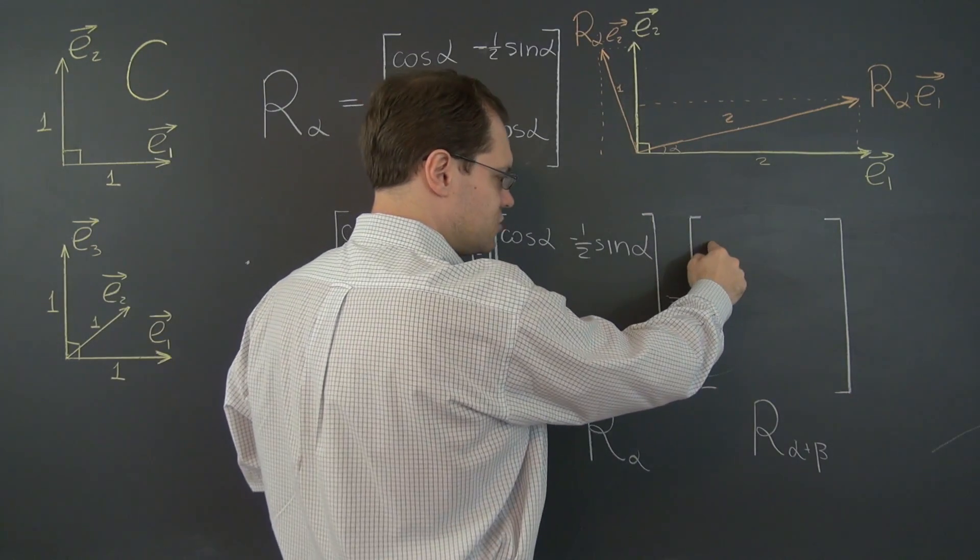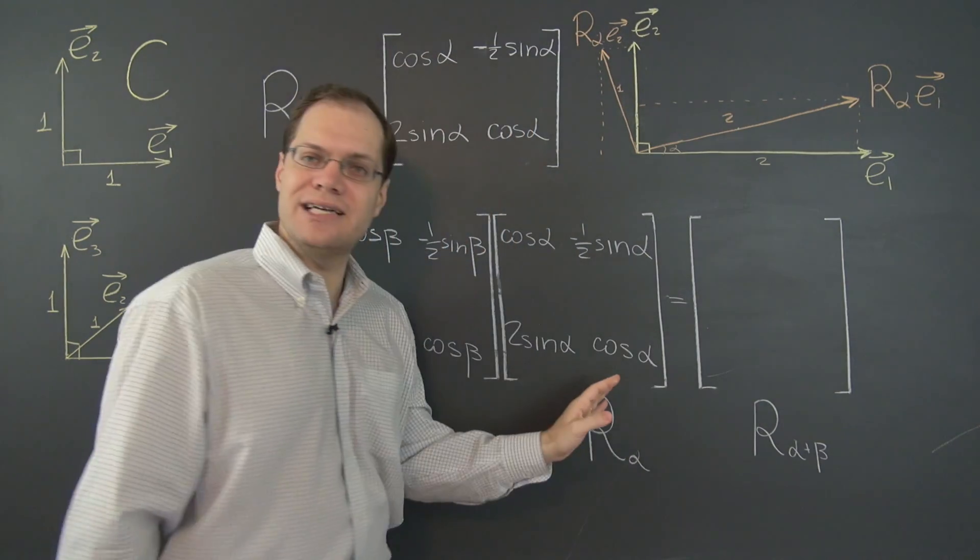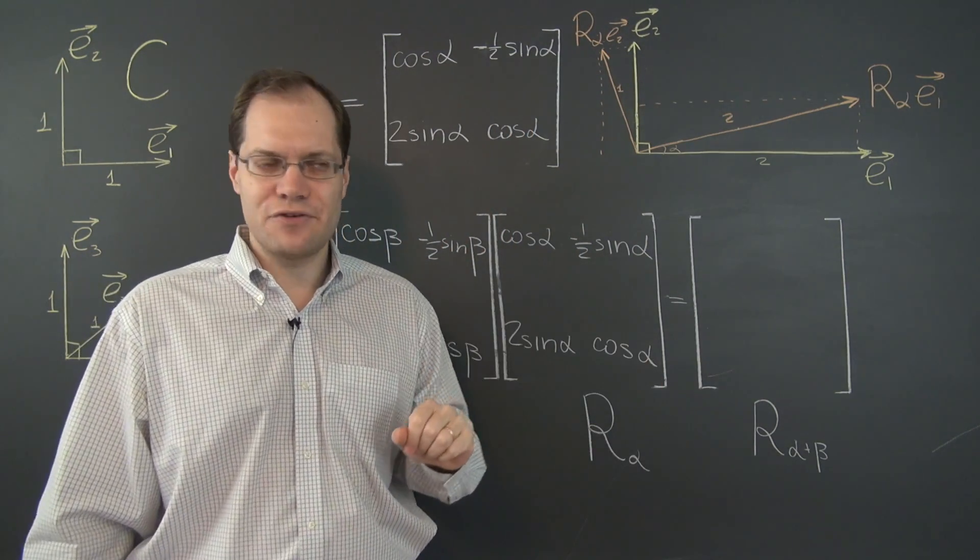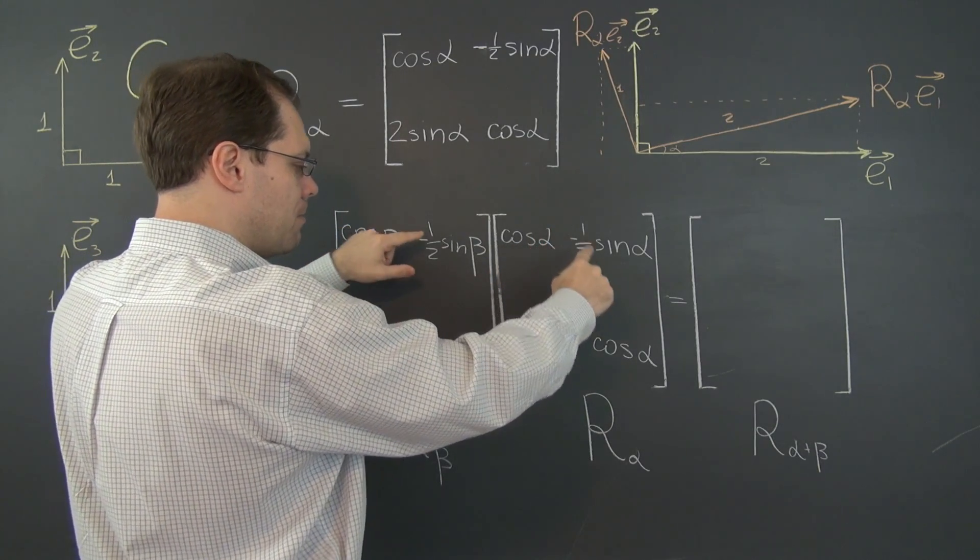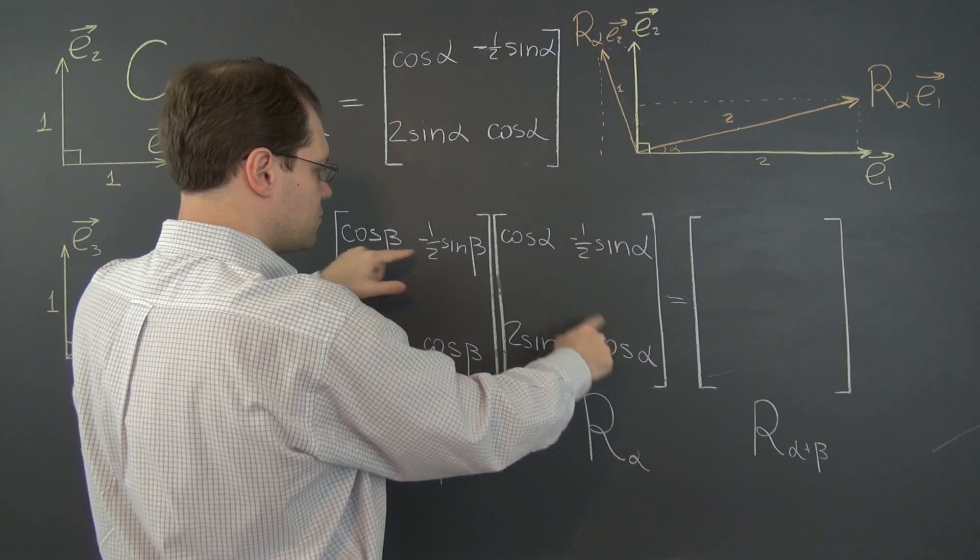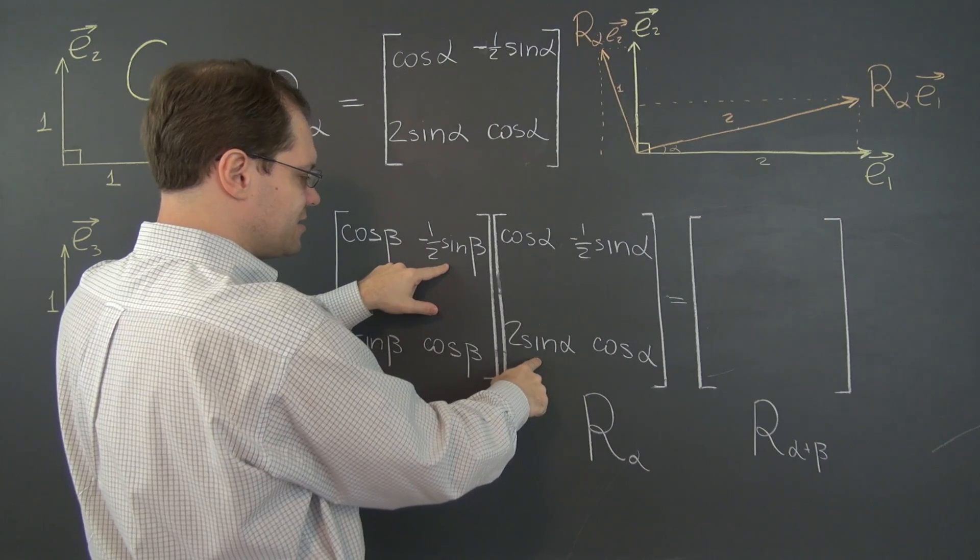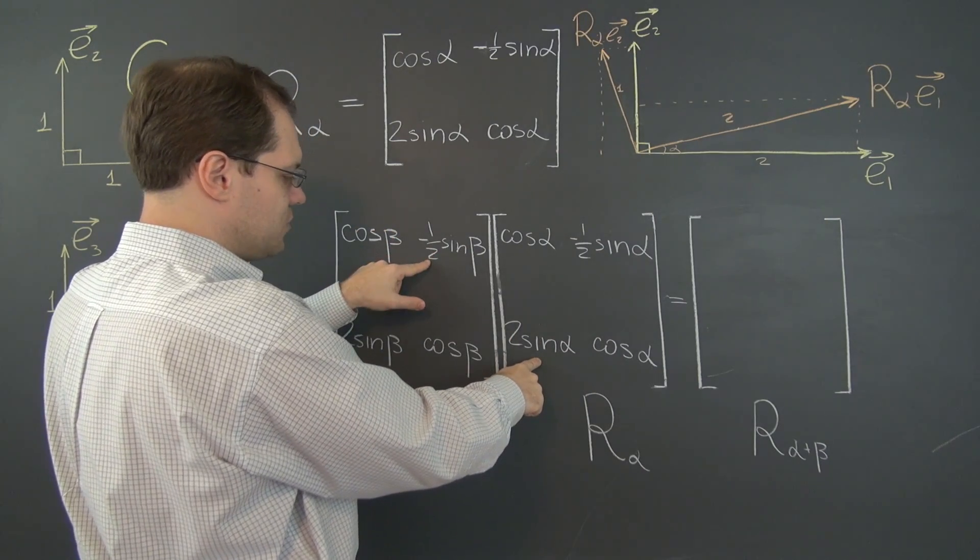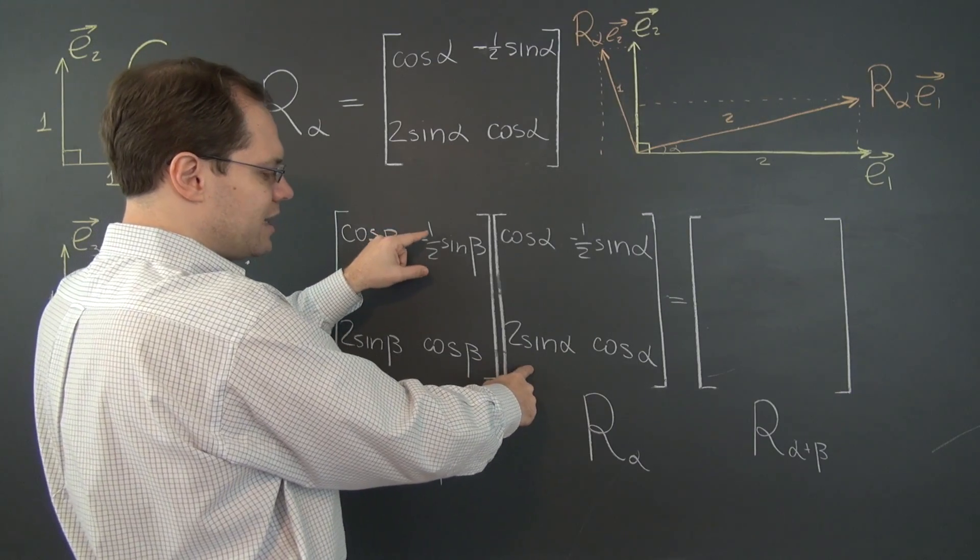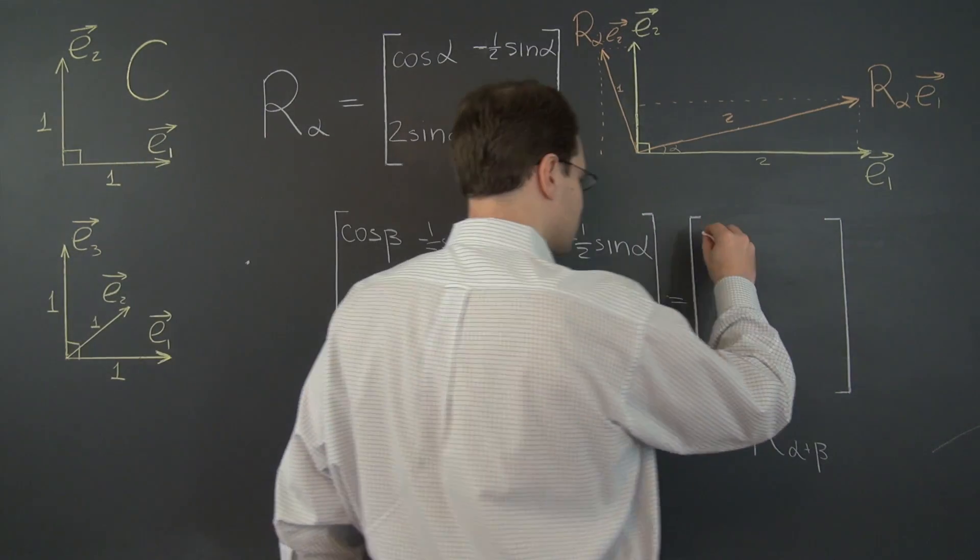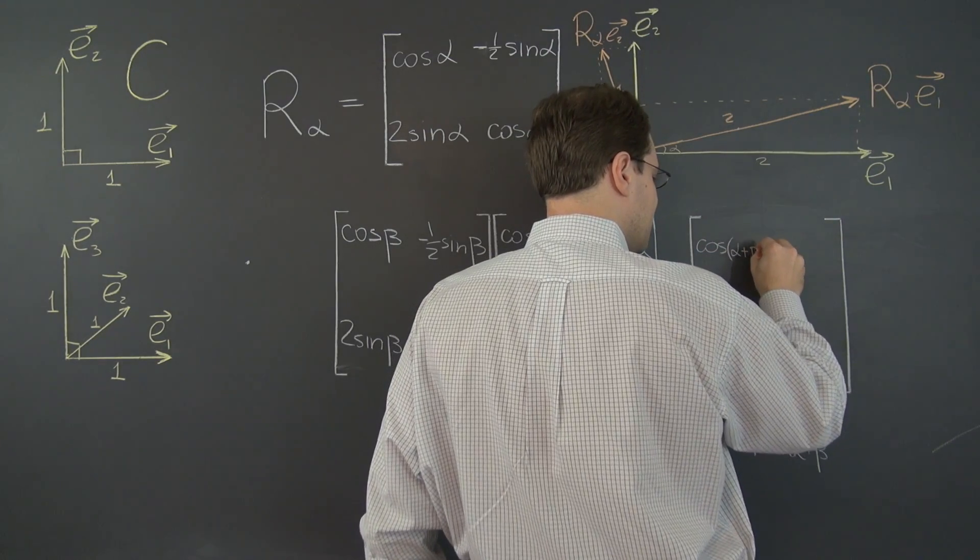Let's start with this entry which should end up being cosine of alpha plus beta. And remember the trig identities that I no longer have on the board. So we have cosine alpha cosine beta minus sine alpha sine beta. So the 1 half and 2 interact perfectly just to give us the right term that goes here. Cosine of alpha plus beta.